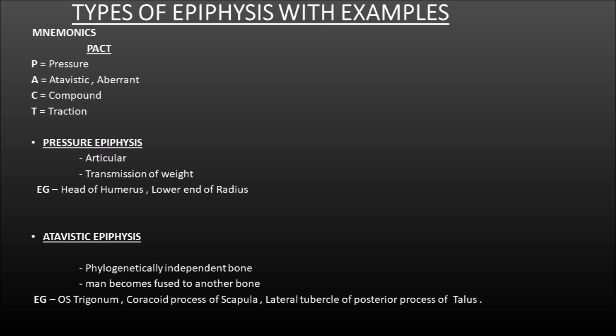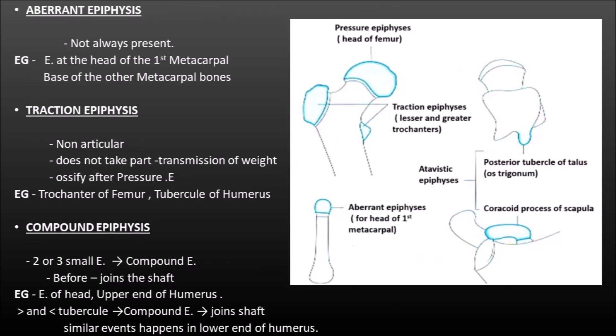Pressure epiphysis is articular and takes part in transmission of weight. Examples are the head of humerus and the lower end of radius. Atavistic epiphysis is phylogenetically an independent bone in which man becomes fused to another bone. Examples are coracoid process of scapula and lateral tubercle of the posterior process of the talus. Aberrant epiphysis is not always present. Examples are the epiphysis at the head of the first metacarpal and base of the metacarpal bone.